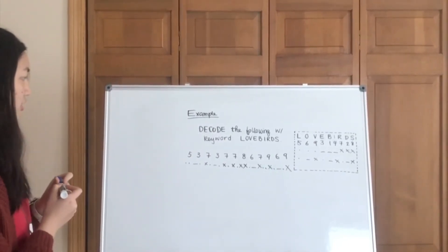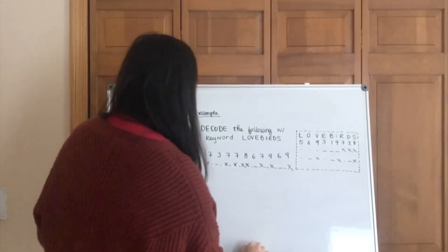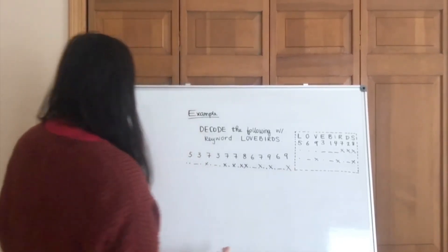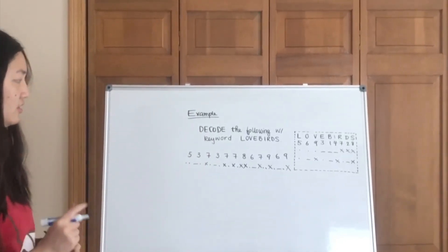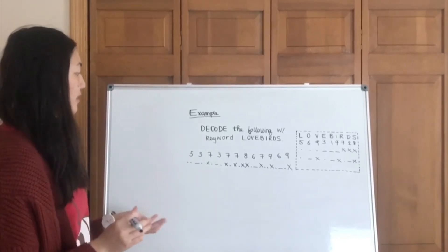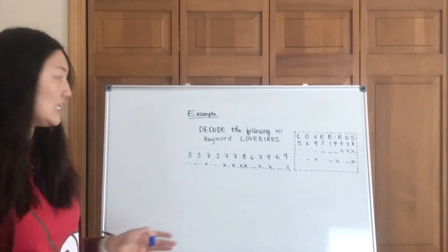So here we can see that we have the x's and we have all the dots and dashes, and this is basically screaming out at us, decode, decode.